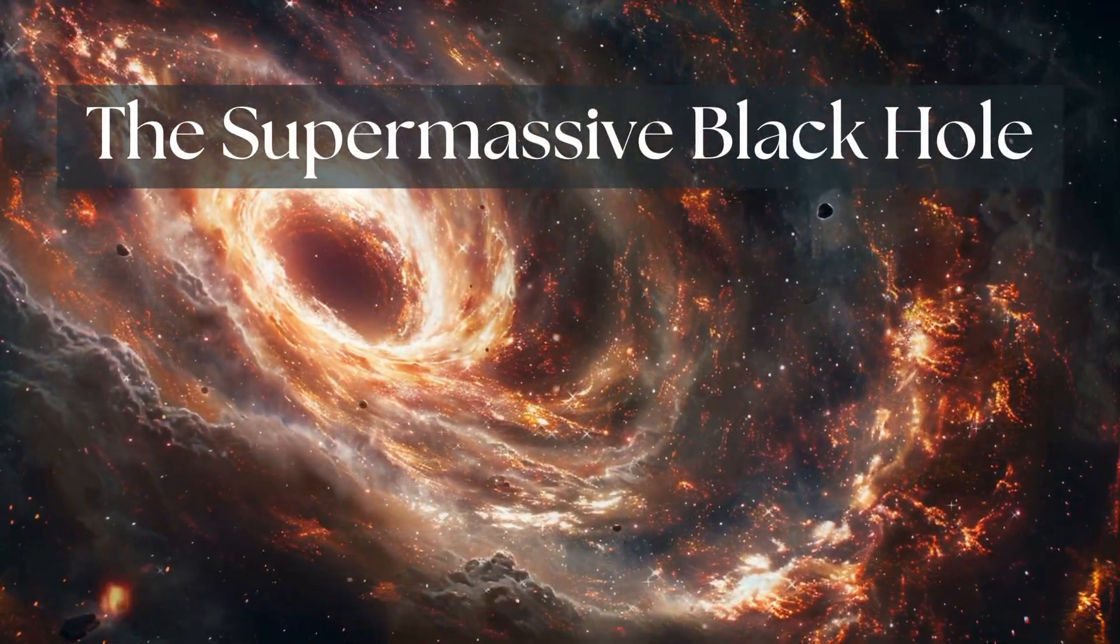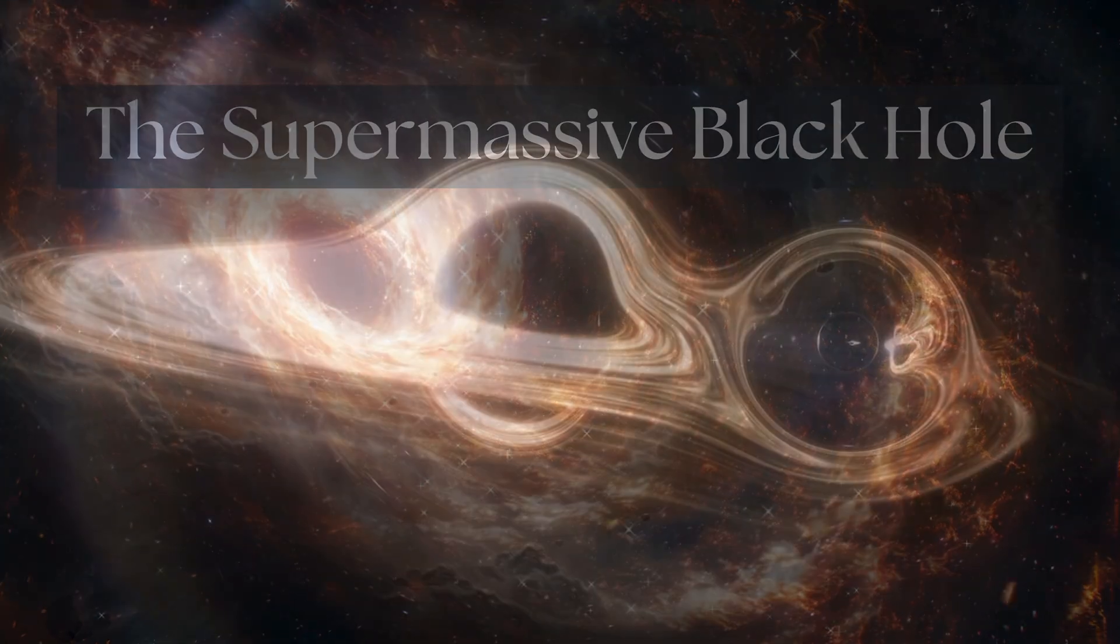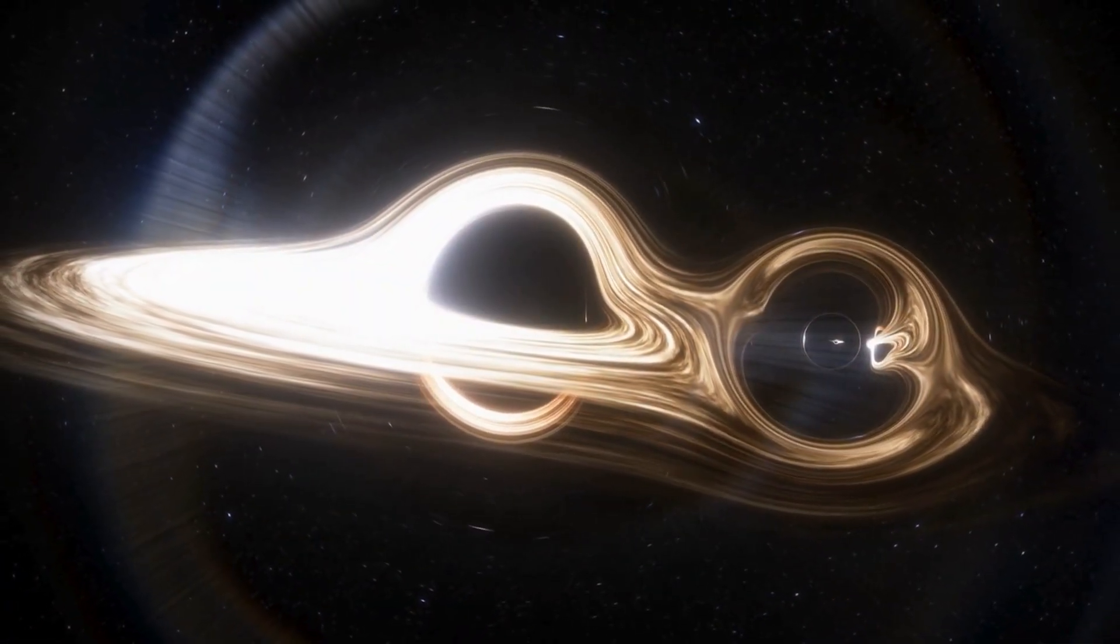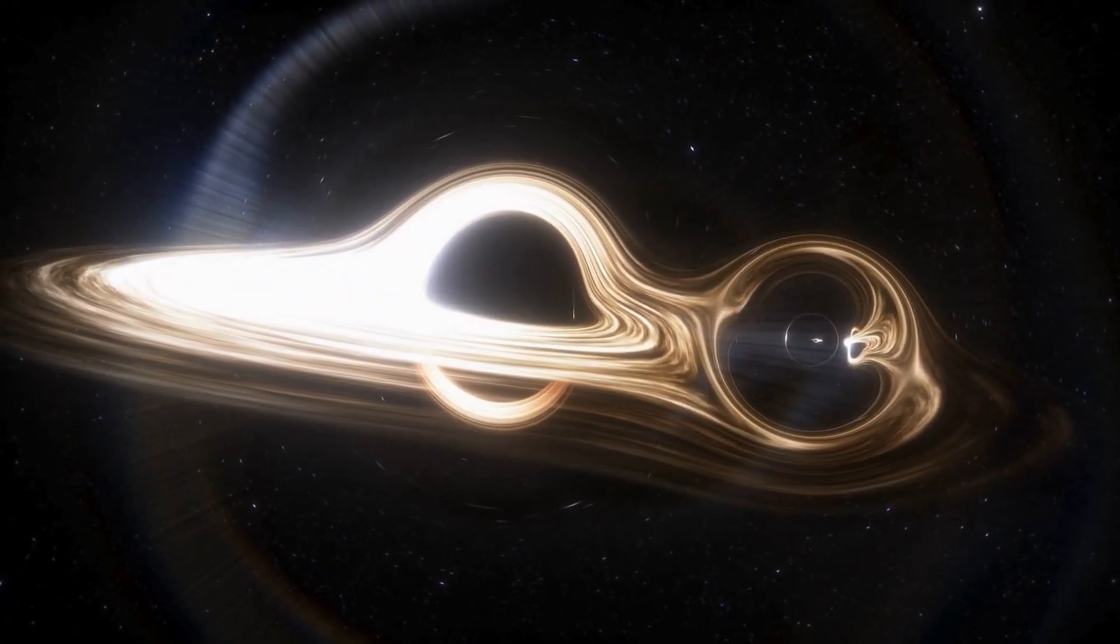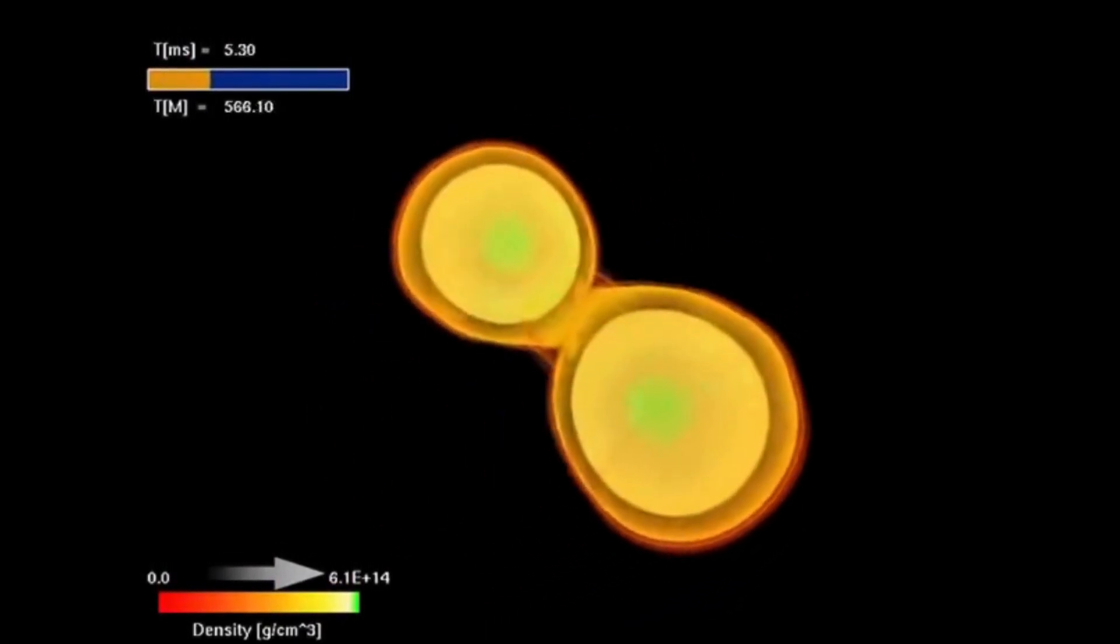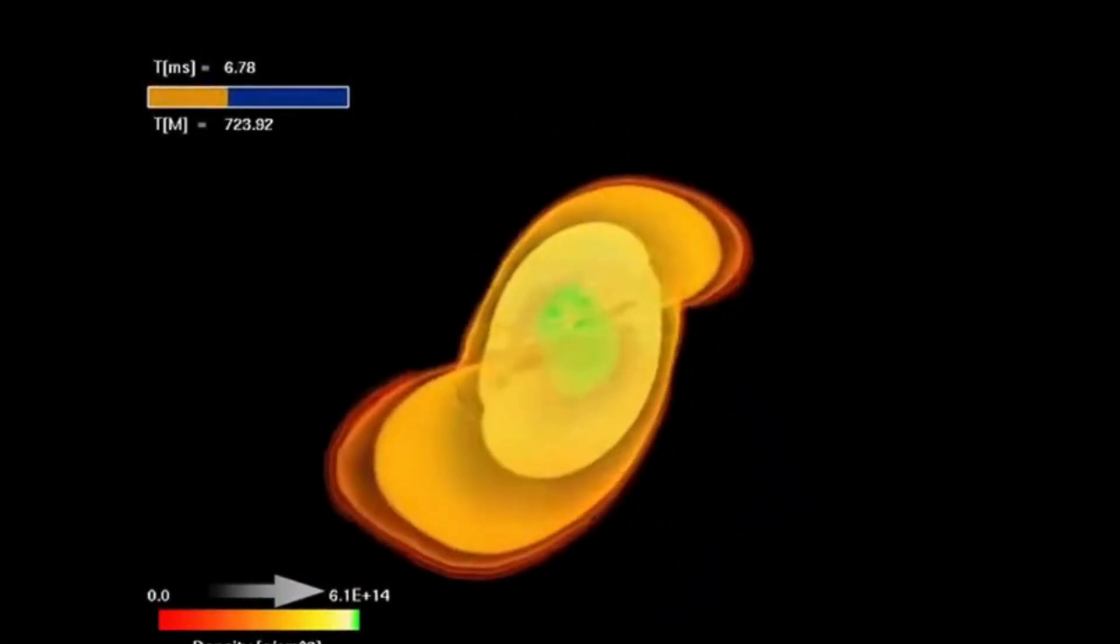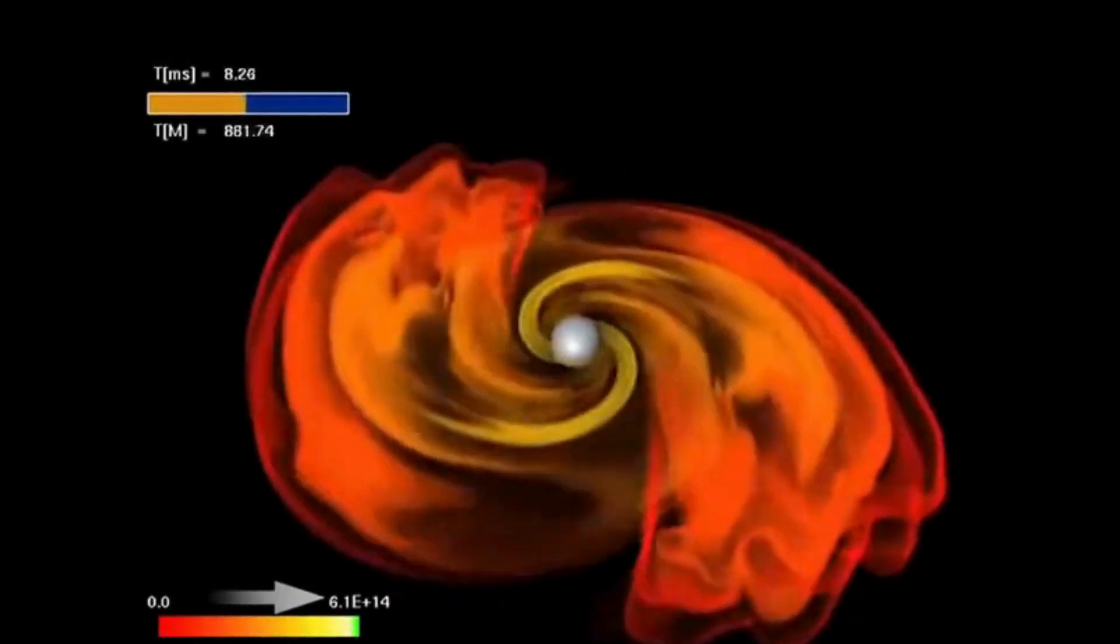Let's talk about supermassive black holes and how big they are, and how they become this massive in size and what happens when they merge. First, let's start with the basics. Black holes form when massive stars collapse under their own gravity.